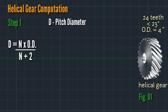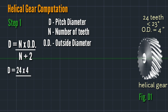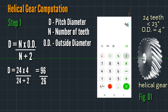Step 1 — pitch diameter formula: D equals n times OD divided by n plus 2, where n is the number of teeth and OD is the outside diameter. So D equals 24 times 4 divided by 24 plus 2. That is 96 divided by 26, which equals 3.692 inches.